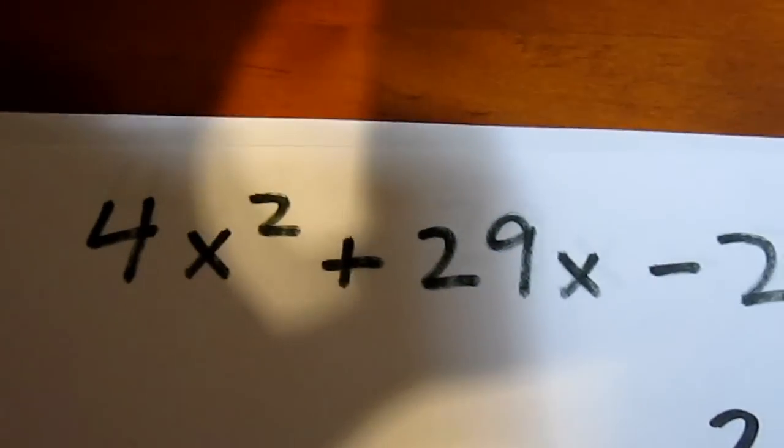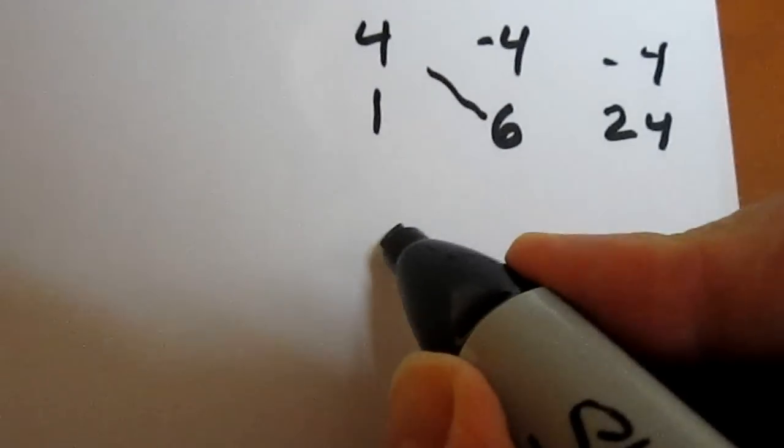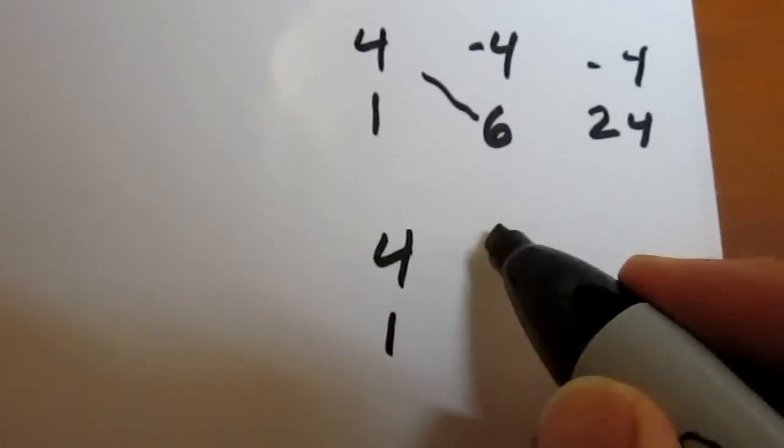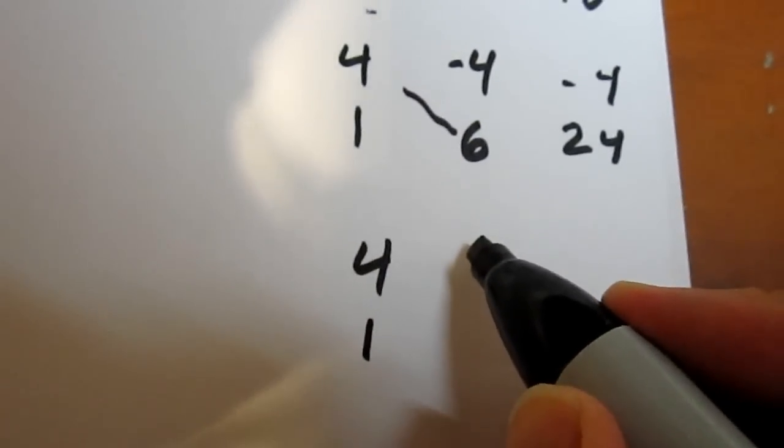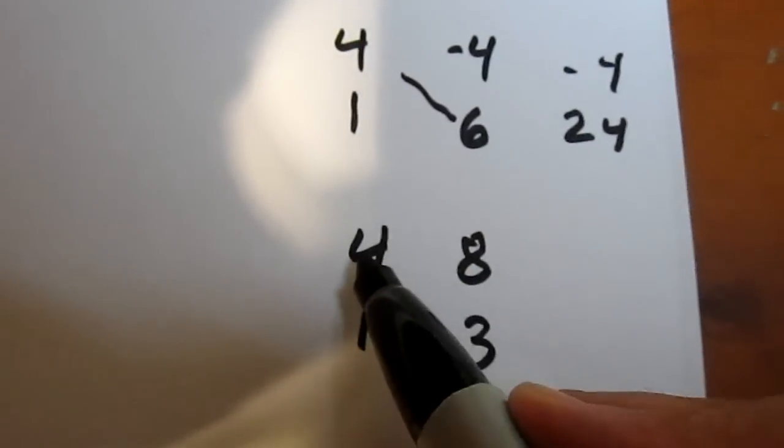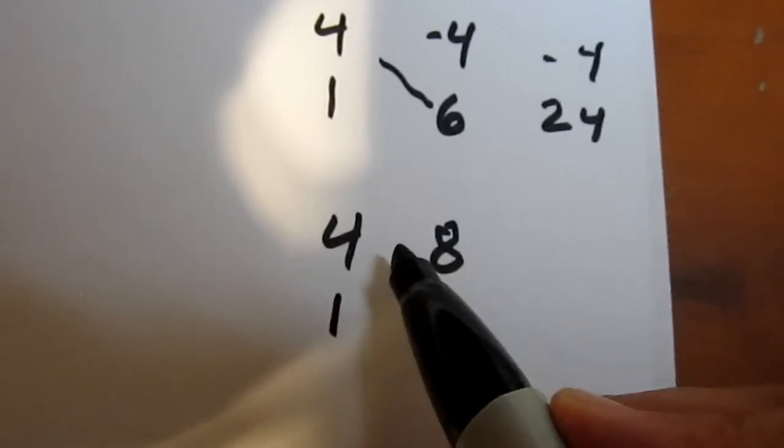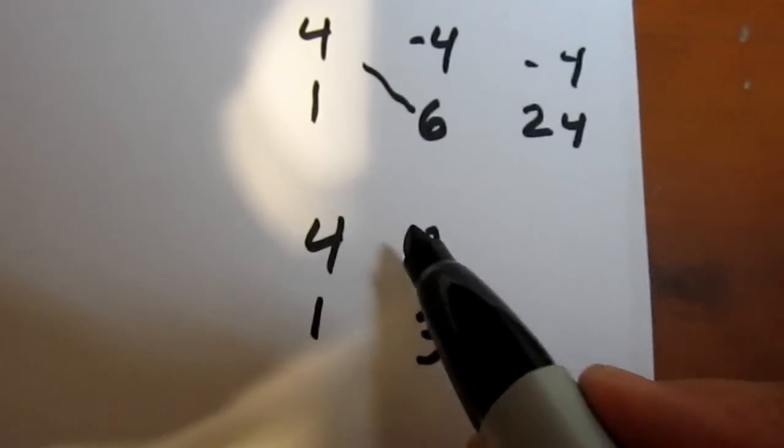But I wanted it to be 29. So I'm going to need numbers farther apart than 4 and 6. So I try 4 and 1, and I try 8 and 3. But again, I look at this and I say to myself, if 4x plus 8 is one of my factors, I can common factor a 2 out of that factor.